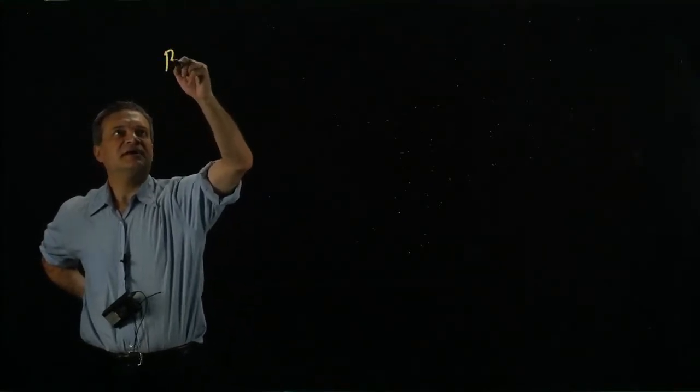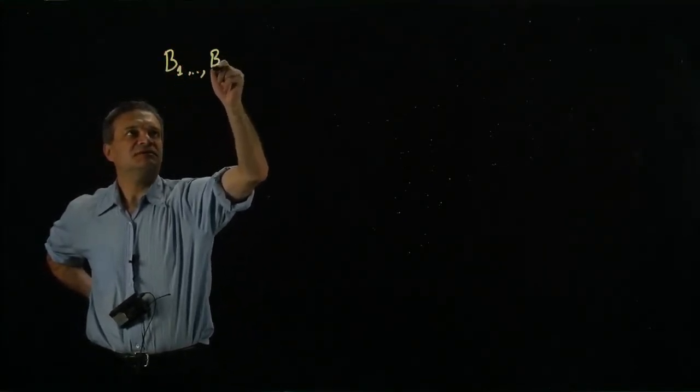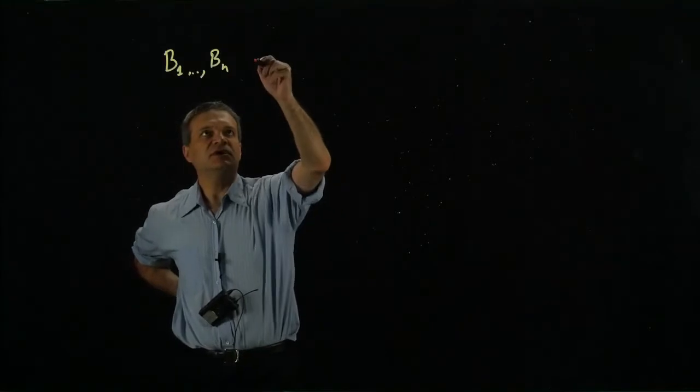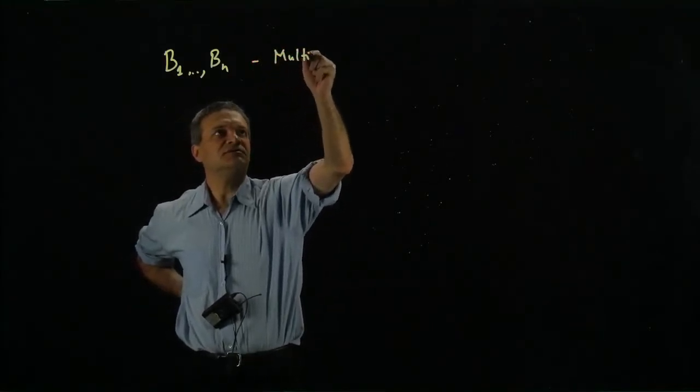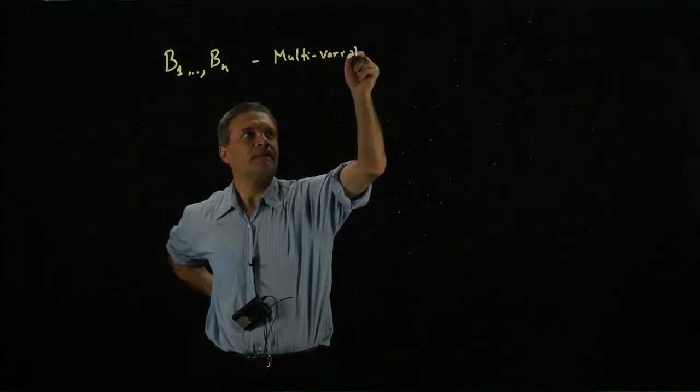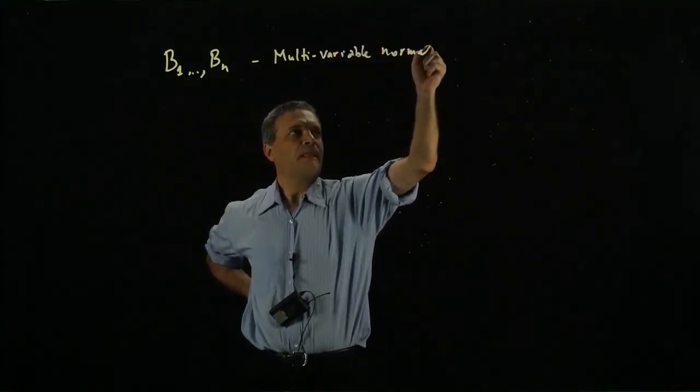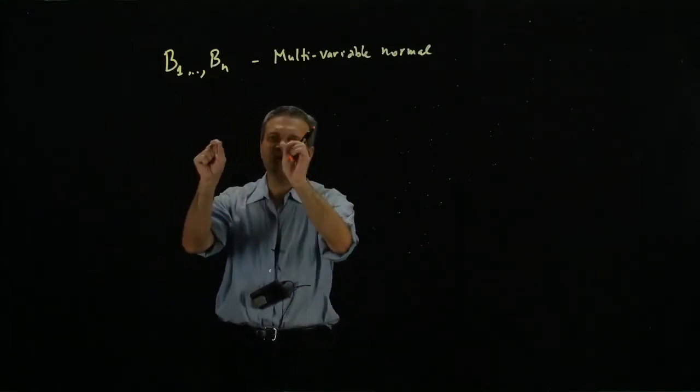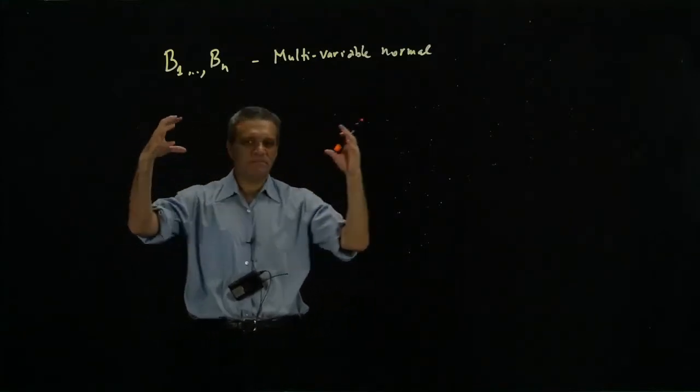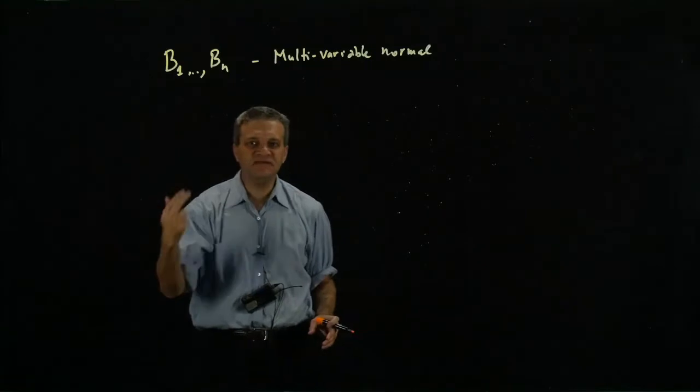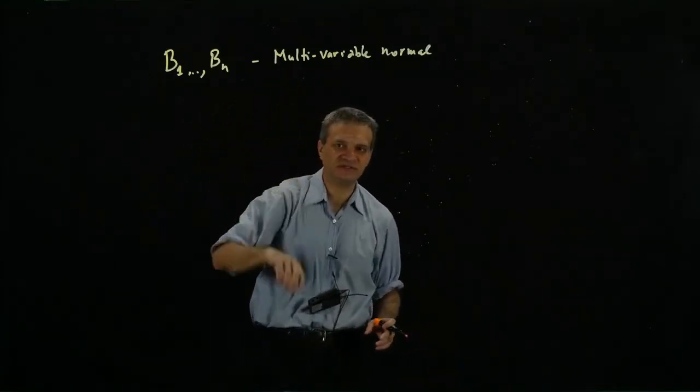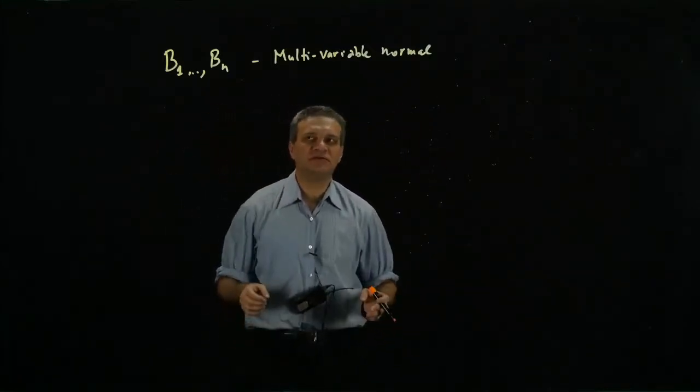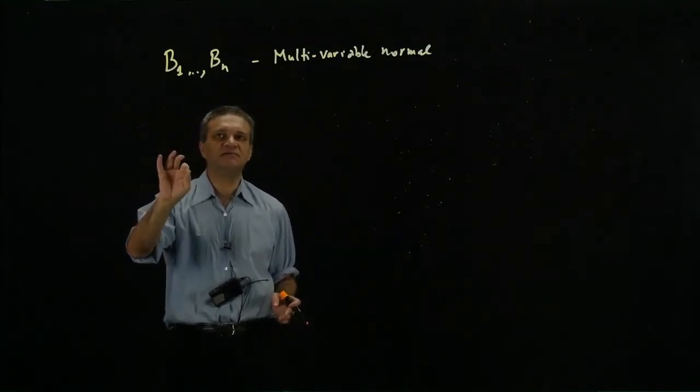So we have n assets, B1 to Bn, and each asset has a certain return. We're assuming a multivariate normal distribution, which means that the probability of these returns being together in a certain cube is given by an n-dimensional function, and we have this n-dimensional integral that we need to integrate to get the probability.